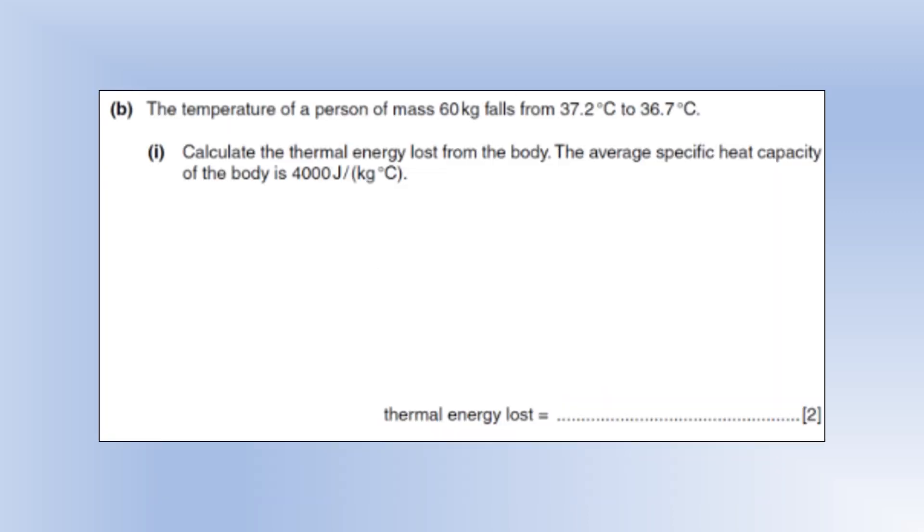So the temperature of a person of mass 60 kilograms falls from 37.2 to 36.7. Calculate the thermal energy lost from the body, and the average specific heat capacity is 4000. Okay, so let's plug in our numbers. We're going to be using Q equals mc delta T. We've got a relatively small temperature change, but once we multiply that by the mass and the specific heat capacity, that's going to be quite a lot of energy that we've lost. So the temperature hasn't decreased that much, but that required us to emit quite a large quantity of energy.